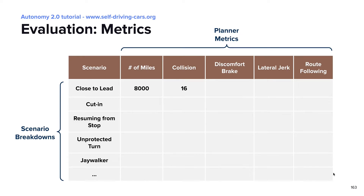This is where well-defined metrics become important — they convert artifacts into numbers which are much easier to parse. Unlike other ML problems, the planning task usually requires many metrics instead of a single one to fully cover all aspects of planner performance. For example, as shown in this table, we have the collision metric to capture the safety aspect, the discomfort brake and lateral jerk to capture the comfort aspect, and the route following metric to show how well the planner follows the route. In many cases, we also need a detailed scenario-wise breakdown of these metrics.